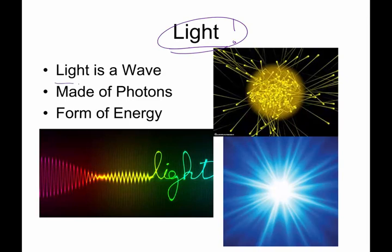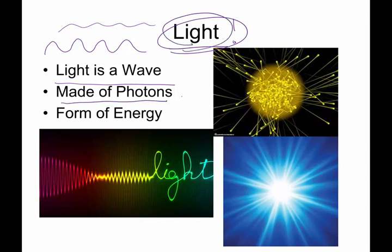Light is a wave, meaning that it has wavelength frequency, and we'll talk about that later. But waves have similar properties to what you're going to find in water waves near the beach, where there is an oscillating, undulating, up-and-down motion to this object. The crazy and wacky thing about light is light is also made of particles called photons.